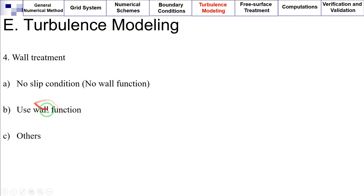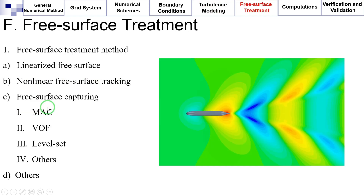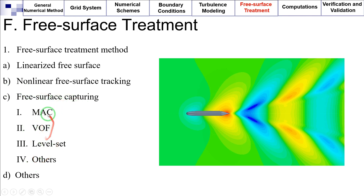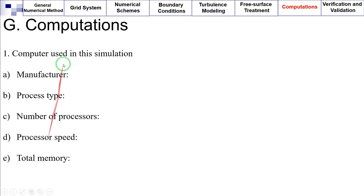What is the wall treatment — are you using a no-slip condition with no wall function, or are you using a wall function? Free surface treatment: You need to specify the free surface treatment method — is it a linearized free surface, a non-linear free surface tracking, or a free surface capturing method? If capturing, which approach are you using: MAC (marker and cell), VOF (volume of fluid), level set, or others which you need to write down?